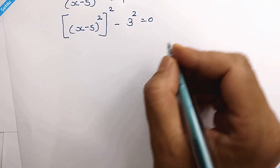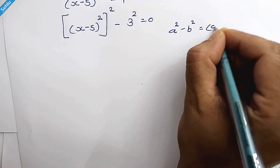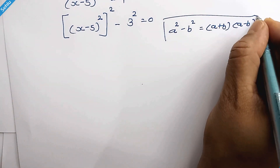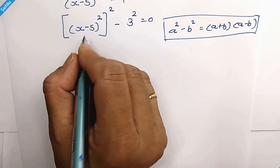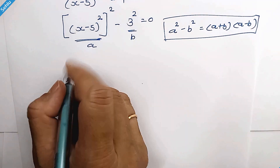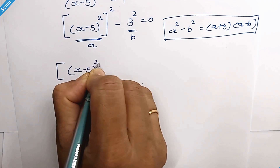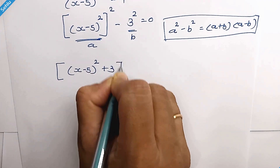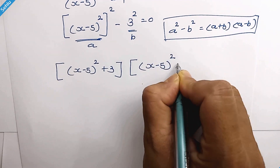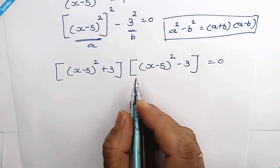Here we can apply the identity a squared minus b squared equals a plus b times a minus b. We compare: this is a and this is b. So our next step will be (x minus 5) whole square plus 3, times (x minus 5) whole square minus 3, is equal to 0.